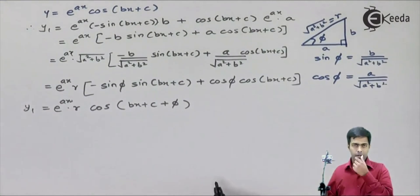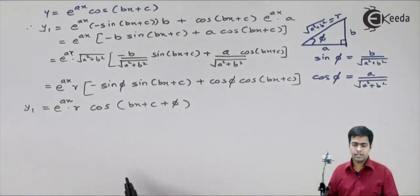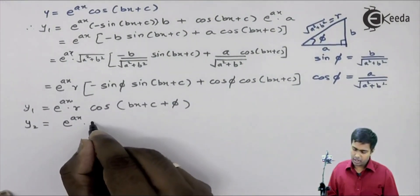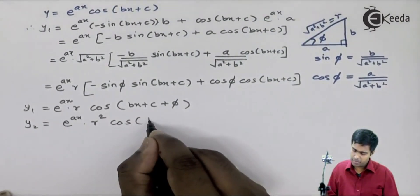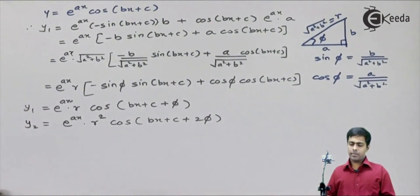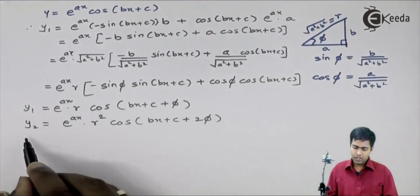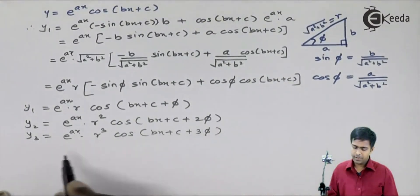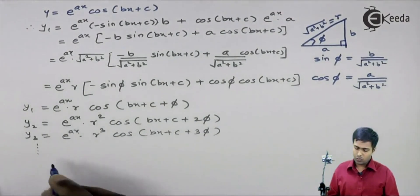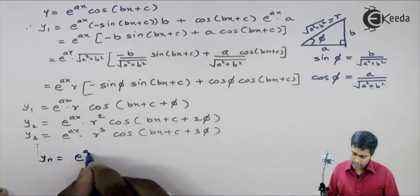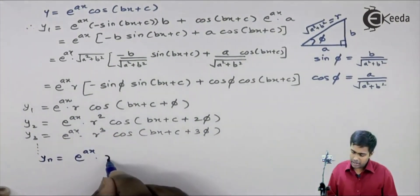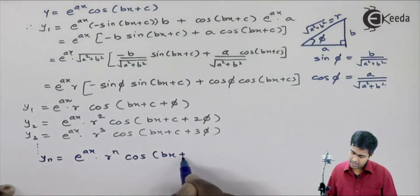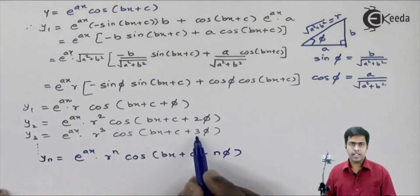We got the value of y1. By using the same triangle method, if we find y2, we get e raised to ax and one more r, so r squared, and the cosine argument becomes bx plus c plus 2 phi. For y3 we get e raised to ax, r cubed, cos of bx plus c plus 3 phi. So we can predict the value of yn: we get e raised to ax — since e raised to ax appears in all terms — r raised to n, and cos of bx plus c plus n phi, since the multiple matches the derivative order.